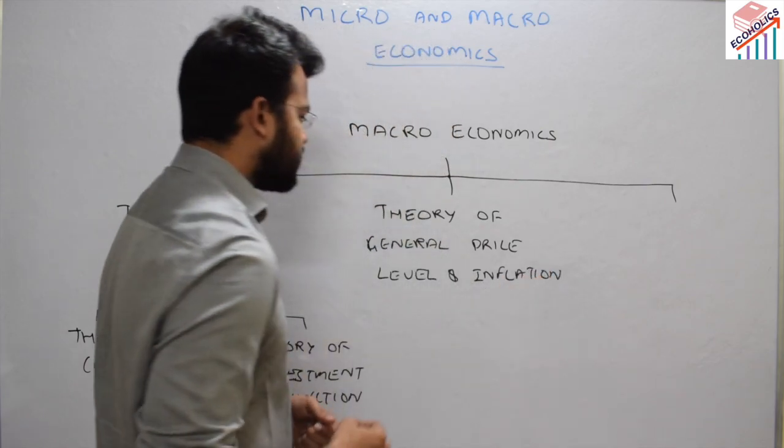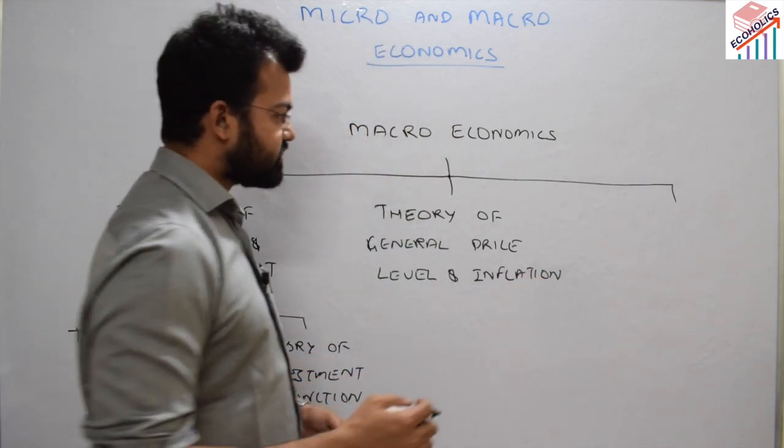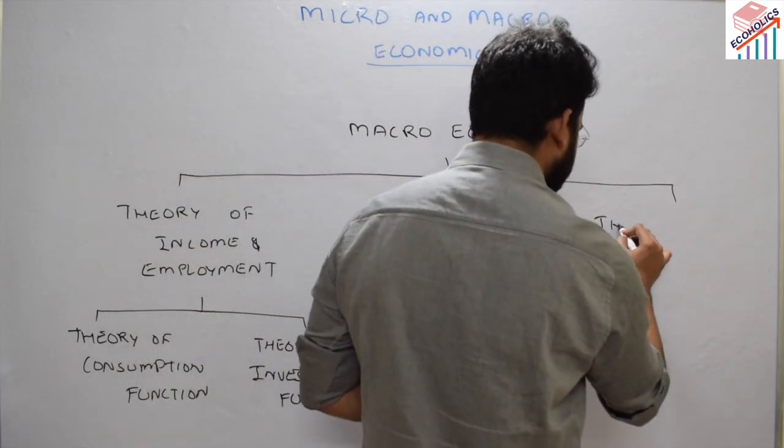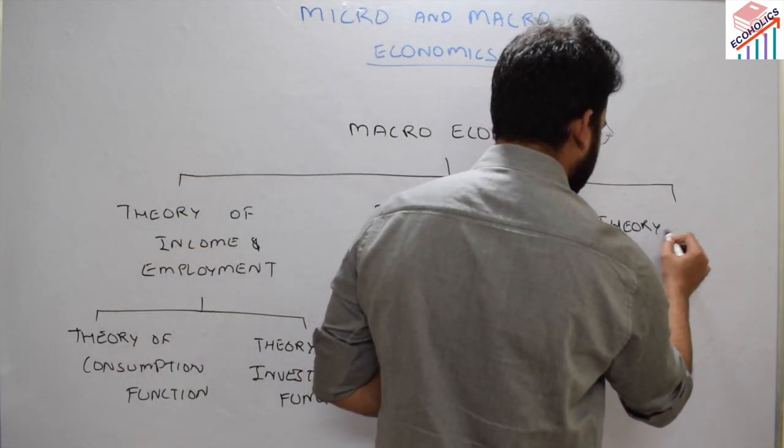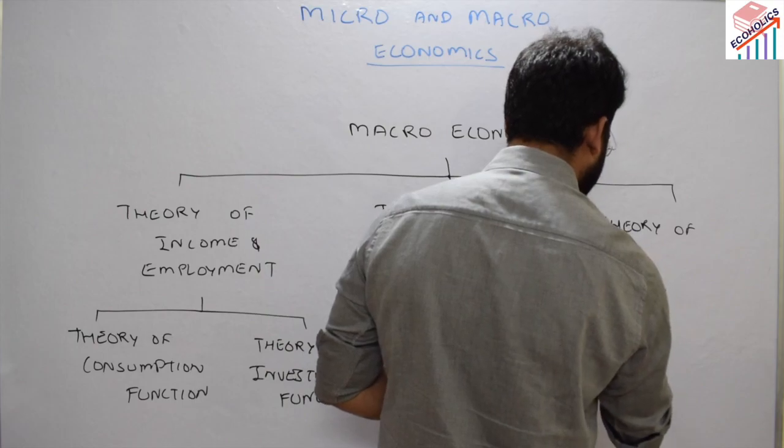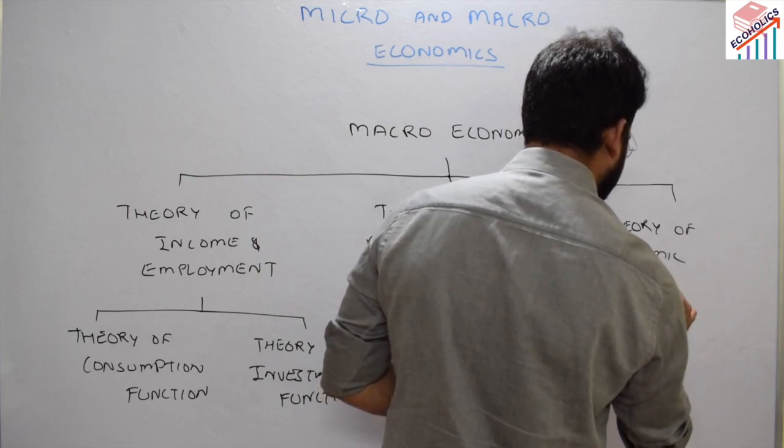The second head is the theory of general price level and inflation, and the third head is the theory of economic growth.